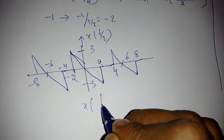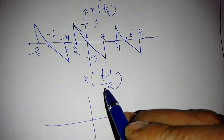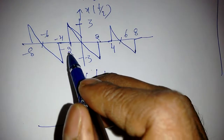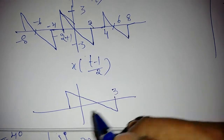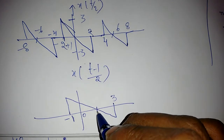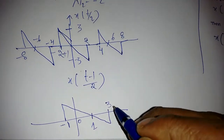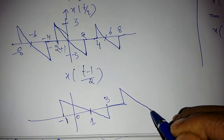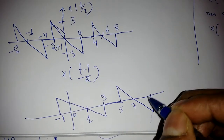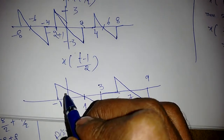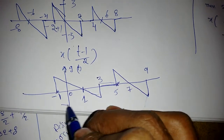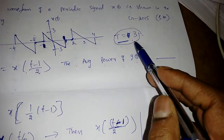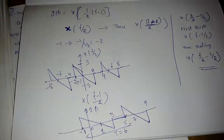Now we shift x(t/2) by 1 to get x((t minus 1)/2), which is g(t). A delay of 1 means we add 1 to all time values: minus 2 becomes minus 1, 0 becomes 1, 2 becomes 3, 4 becomes 5, and so on. The signal now spans from minus 1 to 5. The time period of g(t) is 6, since the original period 3 is scaled by 2.